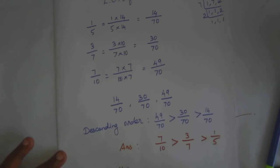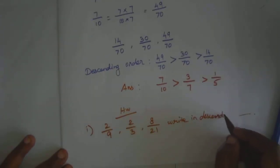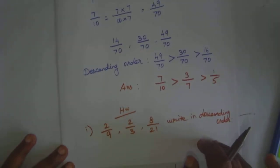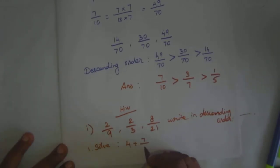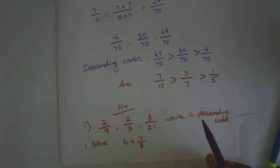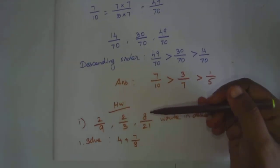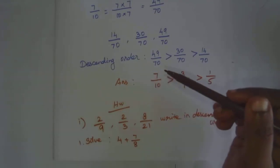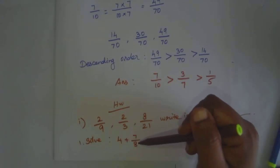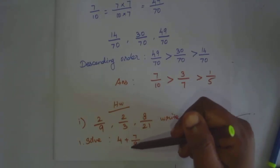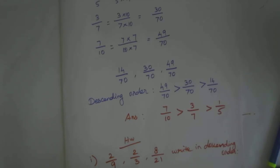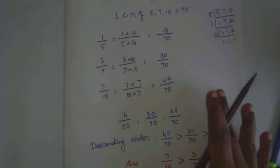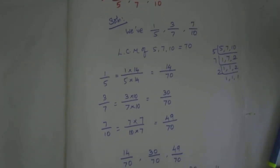Writing descending order — this is your homework. Another part: solve, first one: 4 plus 7 by 8 — this is also your homework. If you want to add, you can find the LCM and convert to the same denominator. You can write this in your homework. After completing every single line. Thank you.